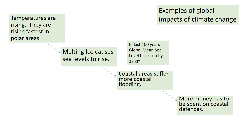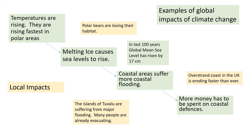Temperatures are rising, and they're rising fastest in polar areas. The average global temperature increase is about one degree over the last 100 years. This leads to knock-on effects: melting ice causes sea levels to rise — around 17 centimetres of sea level rise over the last 100 years. This means coastal areas around the world suffer more coastal flooding, and more money must be spent on coastal defences. Locally, melting ice is causing polar bears to lose their habitat, and low-lying islands like Tuvalu in the Pacific are severely affected — many people have already had to evacuate.